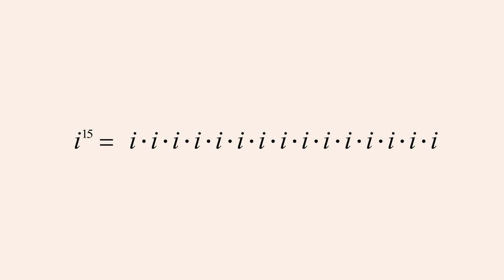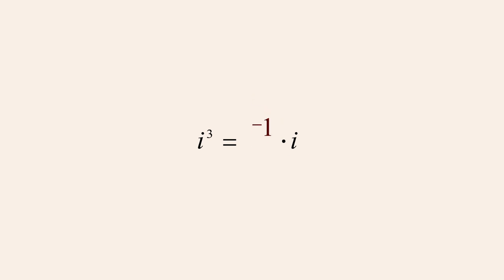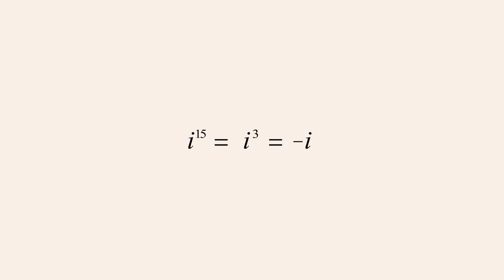So let's say that we have the expression i raised to the fifteenth power. Since i to the fourth power is 1, we can eliminate every group of four multiplications by i without changing the value of that expression. Therefore, i to the fifteenth power is equal to i to the third power. And since i-squared is negative 1, i to the third power is negative i, and so is i to the fifteenth power. So any power of i greater than three can be simplified by repeatedly subtracting four from the power that i is raised to.